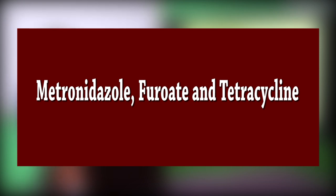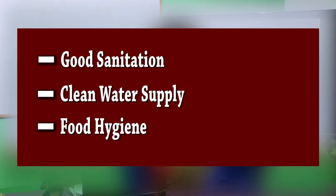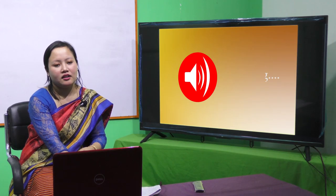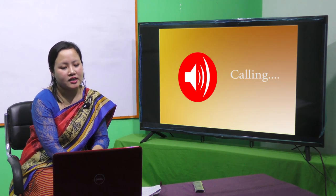For treatment, the drugs of choice such as metronidazole, diloxanide furoate, and tetracycline are administered. For prophylaxis, preventive measures are important. Good sanitation, clean water supply, and food hygiene are required to protect against infection from Entamoeba histolytica.